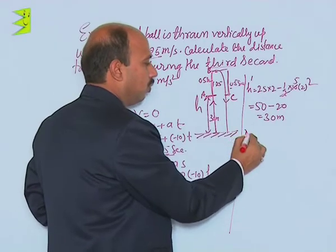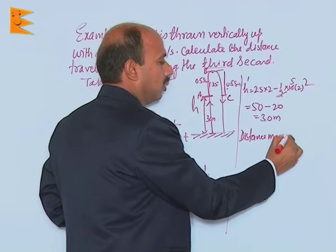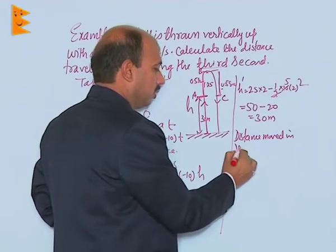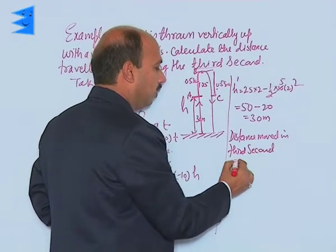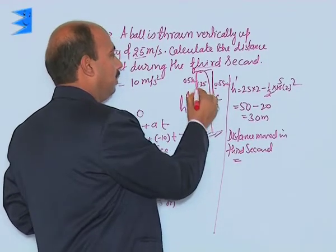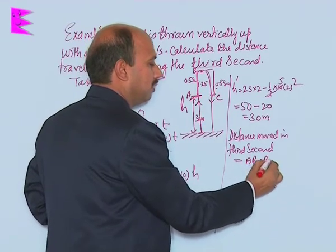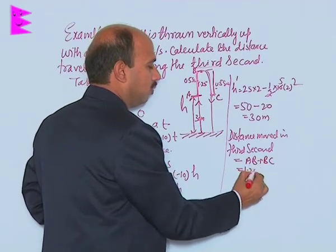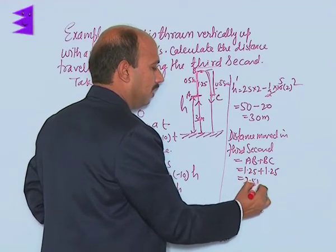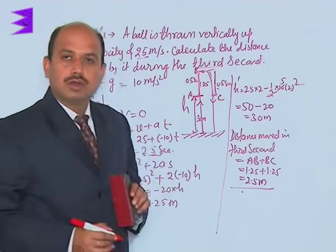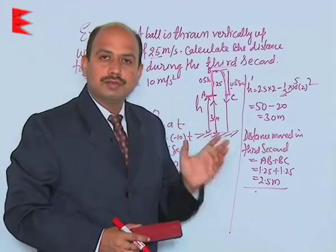Distance moved in the third second equals AB plus BC. So 1.25 plus 1.25, which is 2.5 meters. Distance moved in the third second is 2.5 meters.